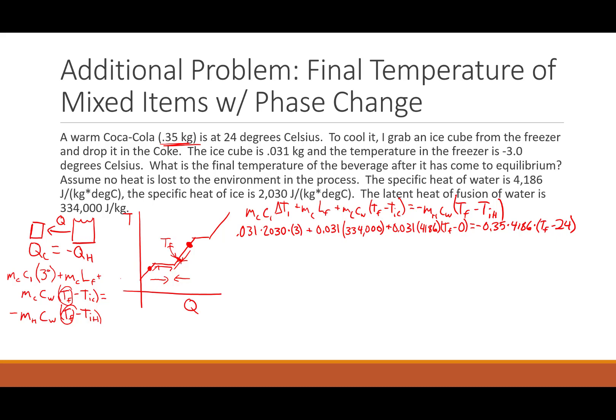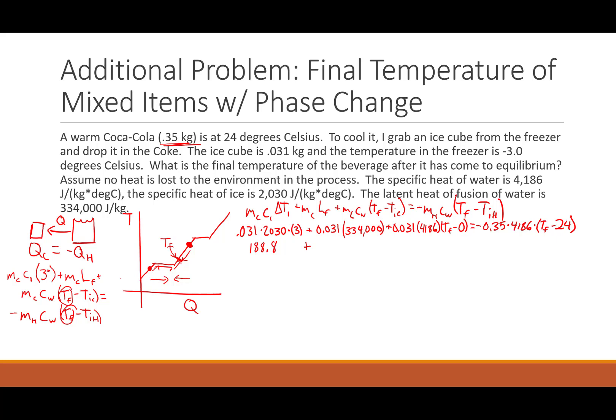0.031 times 2030 times 3, 188.8 plus 0.031 times 334,000, 10,354, plus 0.031 times 4186, 129.8. And that's multiplied by T final minus 0. T final minus 0 is just T final. So this is our T final term. I'm going to underline that.